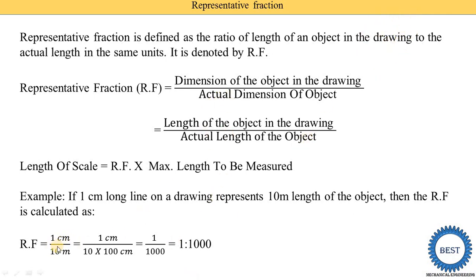Length of the object is 1 centimeter divided by actual length of the object, which is 10 meters. According to the definition, both dimensions are required in the same units, but here the units are different — one is in centimeters and one is in meters. We know that 1 meter equals 100 centimeters, so 10 meters multiplied by 100 gives 1000 centimeters. Therefore, RF is equal to 1 divided by 1000.